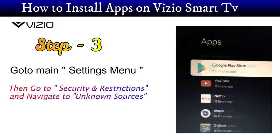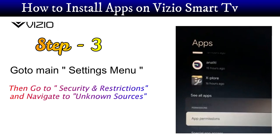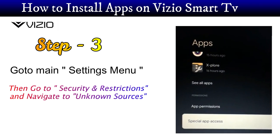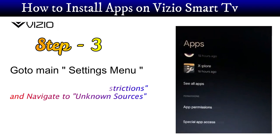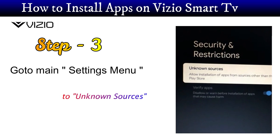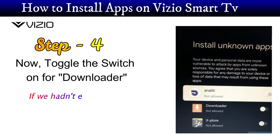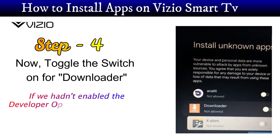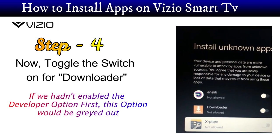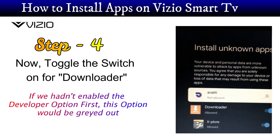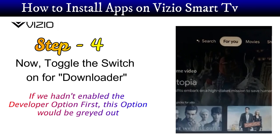Then go to security and restrictions and navigate to unknown sources. Now toggle the switch on for downloader. If we hadn't enabled the developer option first, this option would be grayed out.